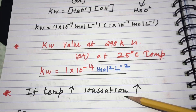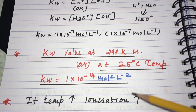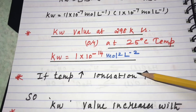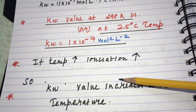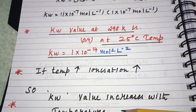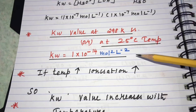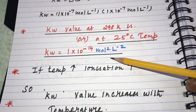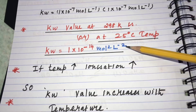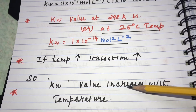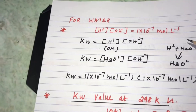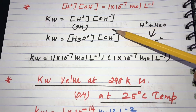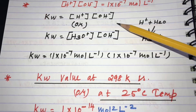If the temperature increases, the ionization increases and the energy of ions in a molecule increases, so the Kw value also increases. Therefore, the Kw value increases with increase of temperature. The Kw value at standard temperature 298 K is 1 × 10⁻¹⁴ mol² L⁻², and it increases with increasing temperature. The ionic product of water is the product of concentration of H⁺ ion and hydroxyl ion in solution.